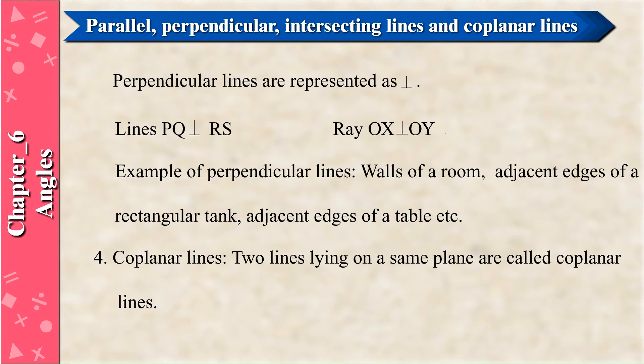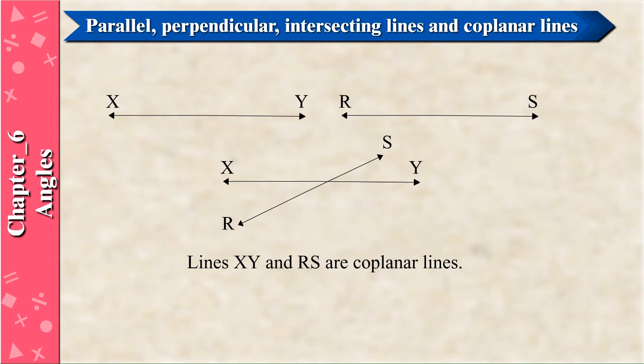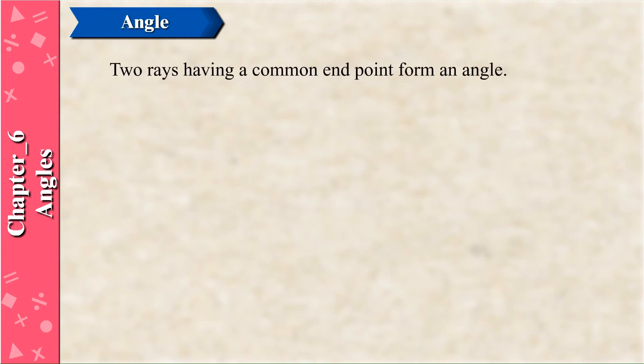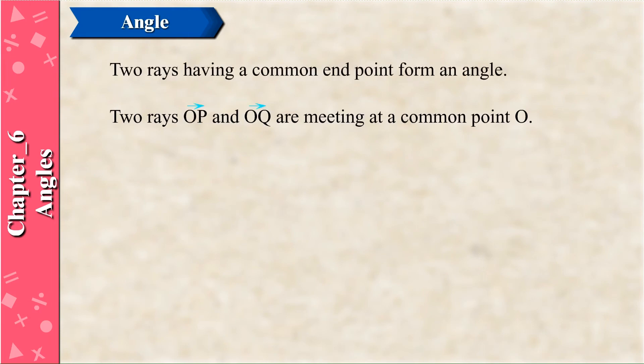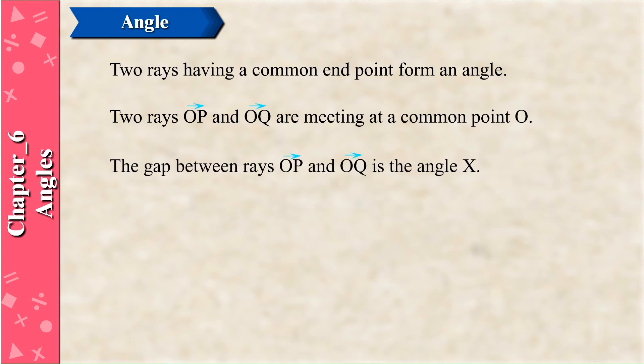Coplanar Lines: Two lines lying on the same plane are called coplanar lines. Line XY and RS are coplanar lines. Angle: Two rays having a common endpoint form an angle. Two rays OP and OQ meet at a common point O, and the gap between rays OP and OQ is the angle X.